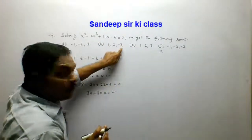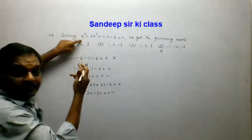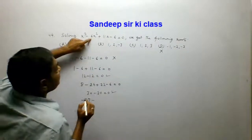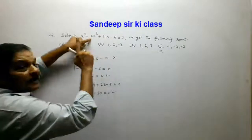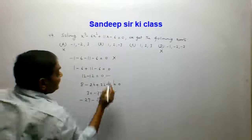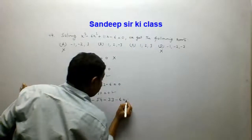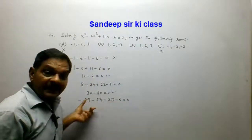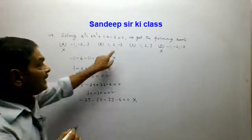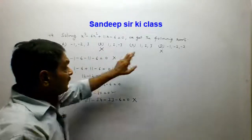Now testing x = -3: (-3)³ - 6(-3)² + 11(-3) - 6 = -27 - 54 - 33 - 6. All terms are negative, so this cannot equal 0. Therefore x = -3 is not a root and option B is not the correct answer.